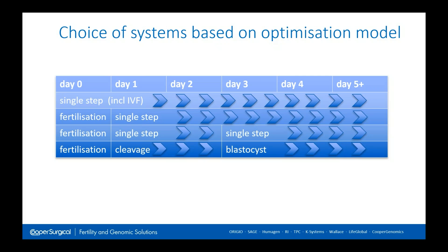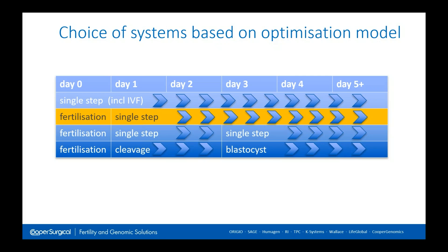There are essentially four media systems we can use: the classic sequential system, the original single step medium with a dedicated fertilization medium plus a single step medium with a refresh typically on day three, a single medium for fertilization and culture throughout, and the more common option of a single step medium used for uninterrupted culture but with a specialized fertilization medium. We will focus on the last approach — embryo culture from zygote through to blastocyst.